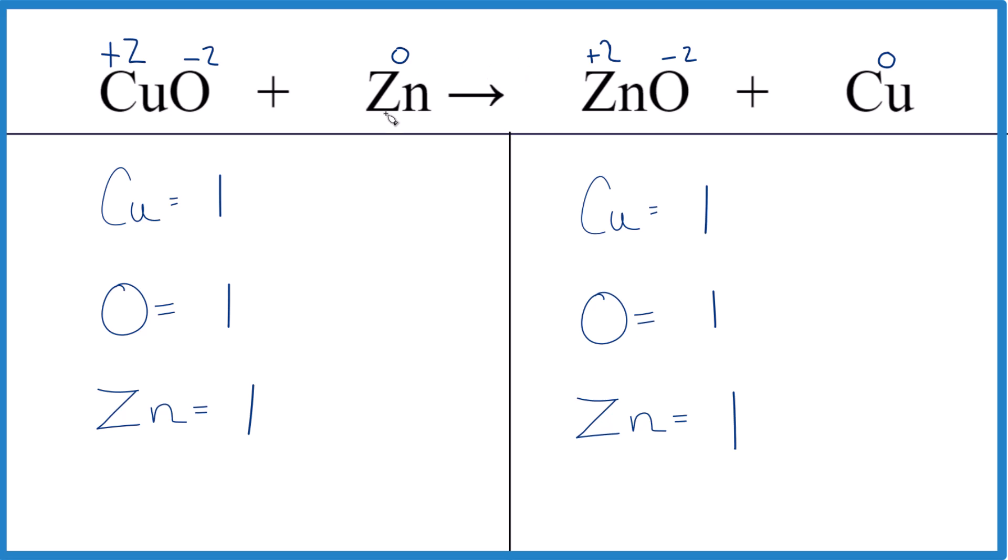So that's kind of the way to think about this. This is redox, because we go from a two plus to a zero, and a zero to a two plus. So electrons were transferred from the zinc, and then the copper ended up getting them. So the copper ends up with an oxidation state of zero. The zinc is plus two.